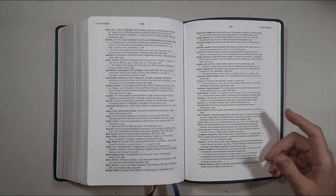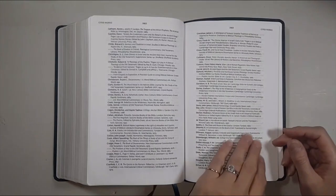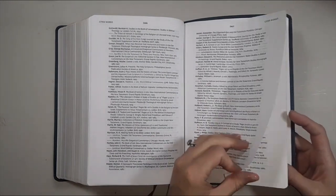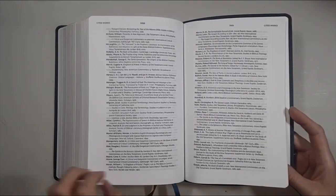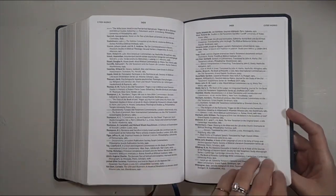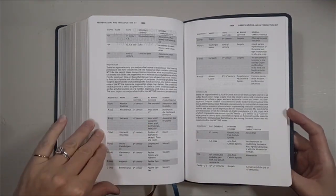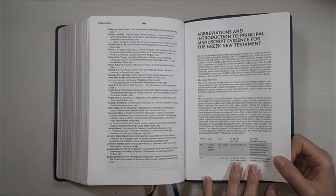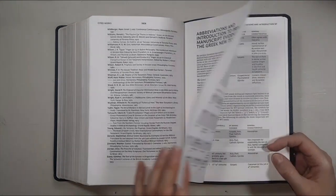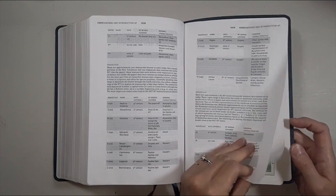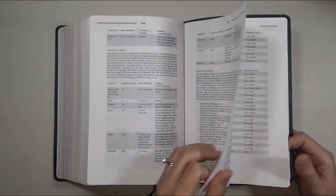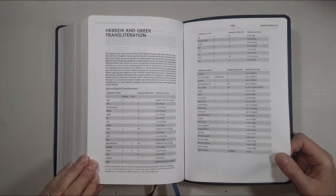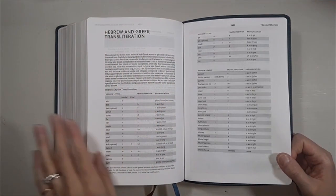List of cited works, so it's got other works cited in here and you can see what all those works are, which is nice. There are evidently quite a few of those cited works. It's just really such a great tool filled with so much information. There's an abbreviations and introduction to principal manuscript evidence for the Greek New Testament. That's awesome. Really cool. Greek and Hebrew transliteration, so it goes through and gives you some information about the Greek and the Hebrew.